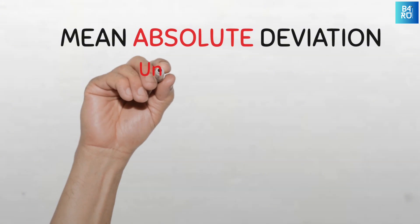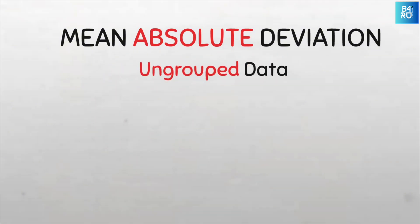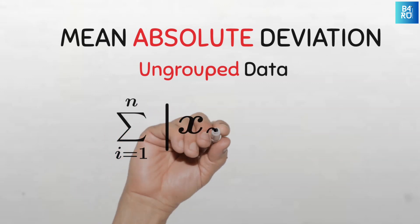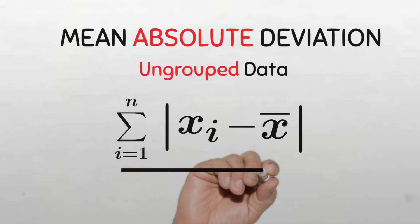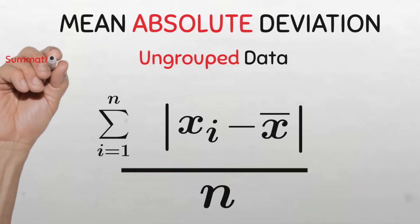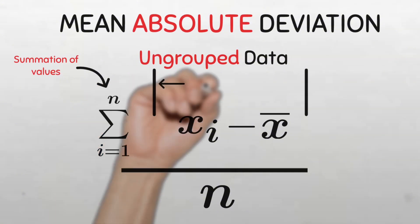The formula for mean absolute deviation for ungrouped data, or individual series data, is given by the summation of all the absolute deviations from the first value to the nth value, all divided by n. Sigma here is the summation of values from the first to the last. These double lines are called modulus.